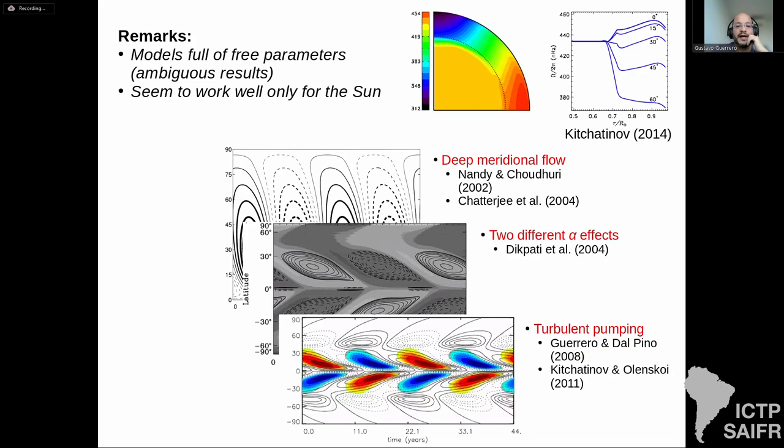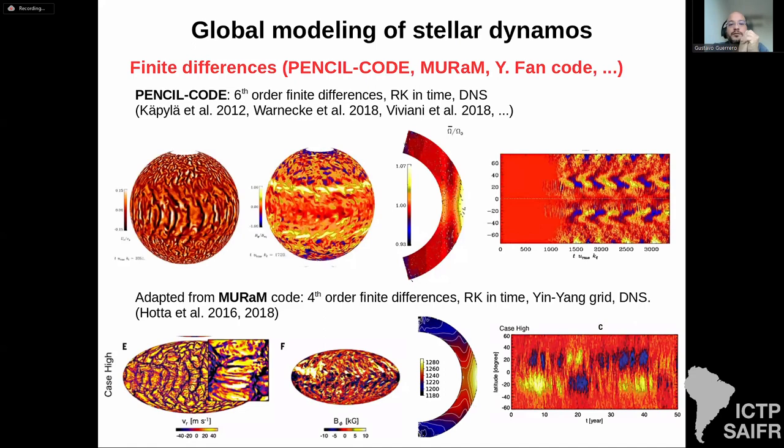The problem is that different models — including one from my PhD thesis with Elspeth — have different inputs and parameters yet produce similar results. Models using this parameterization are ambiguous: it is very hard to know the real profiles and amplitudes of these turbulent coefficients. So we have to move to global 3D modeling in spherical geometry, solving the full MHD equations.